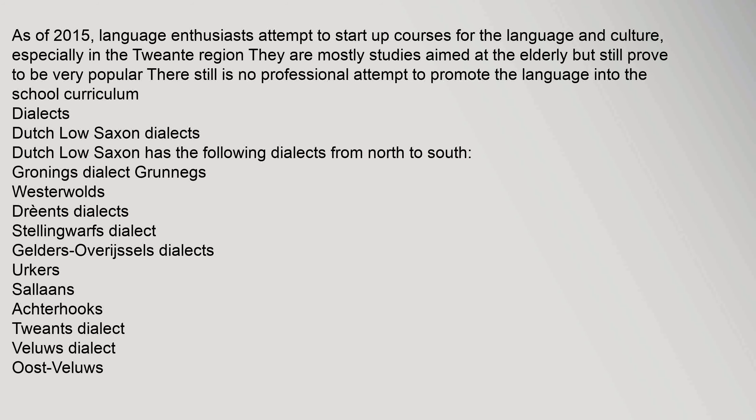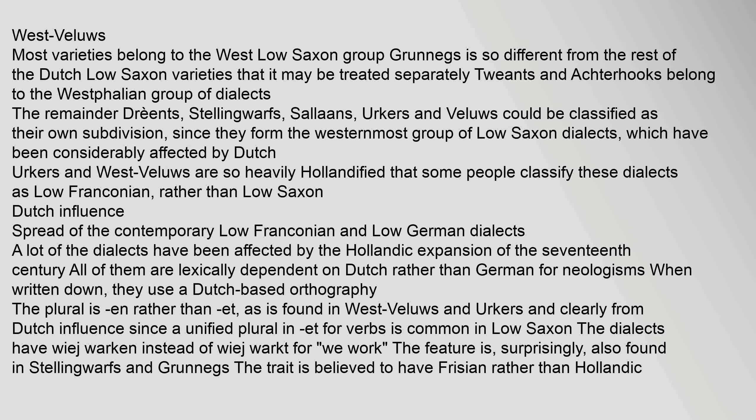Dutch Low Saxon has the following dialects from north to south: Gronings (Grunneks), Westerkwartiers, Drents dialects, Stellingwarfs dialect, Gelders-Overijssels dialects including Erkers, Sallands, Achterhooks, and Twents dialect, as well as Veluws dialect (Oost-Veluws and West-Veluws). Most varieties belong to the West Low Saxon group. Gronings is so different from the rest it may be treated separately. Twents and Achterhooks belong to the Westphalian group of dialects, while Erkers and West-Veluws are so heavily Hollandified that some people classify these dialects as Low Franconian rather than Low Saxon.